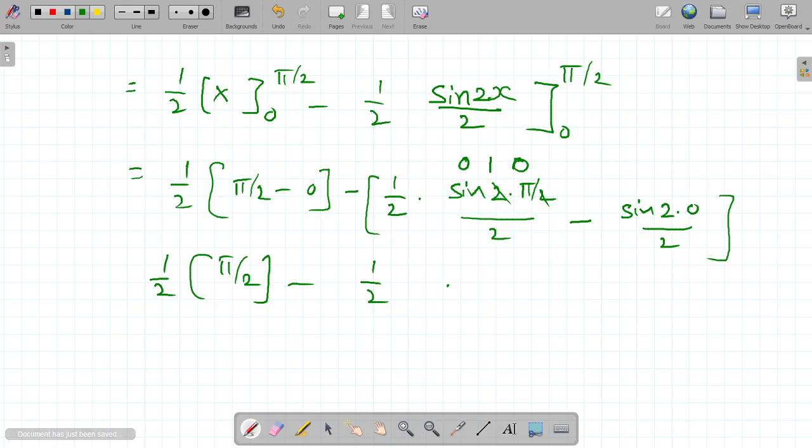Therefore, it is 0 minus sin 2, 0. Sin 2 into 0, 0. Sin 0, 0. So, finally, we got pi by 4 is our answer.